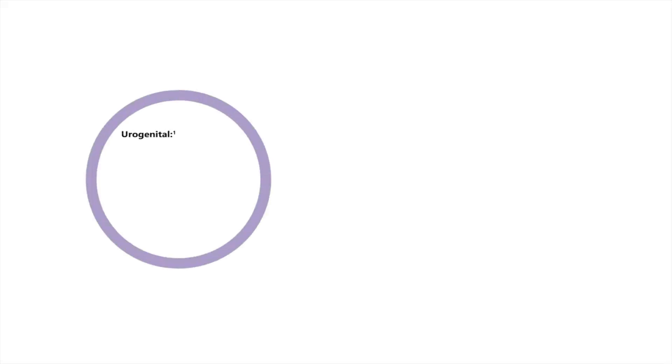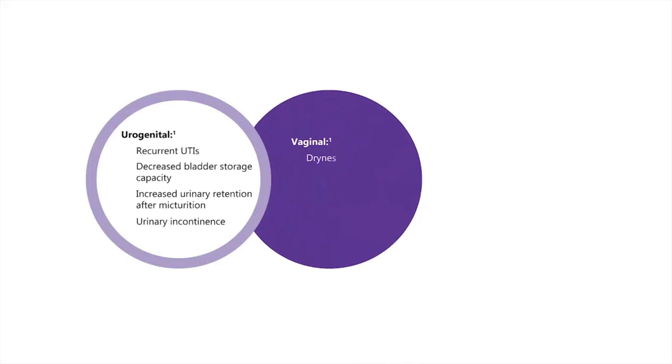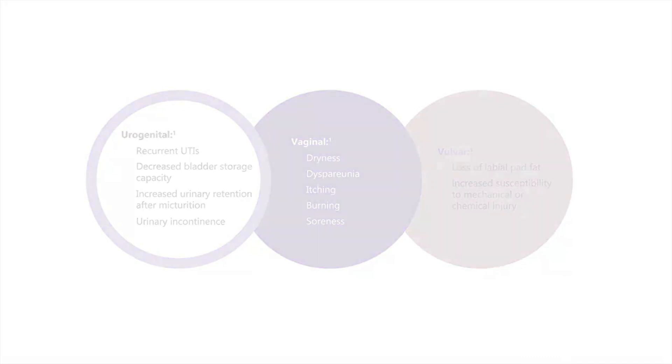Your doctor has prescribed Ovastin cream or Ovastin pessaries to relieve the bothersome vaginal and urinary symptoms that you experience due to low estrogen levels in your body. Ovastin cream and pessaries are estrogen-only products that contain the hormone estriol.